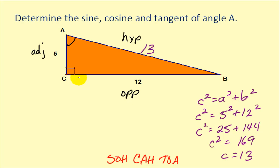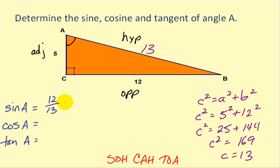You may have recognized this as a 5, 12, 13 right triangle. So the sine of angle A would be the opposite over the hypotenuse — 12 over 13. The cosine of angle A is the adjacent over hypotenuse — 5 over 13. And tangent of A would be opposite over adjacent, or 12 fifths. And that's it — we found those trigonometric values.